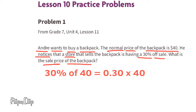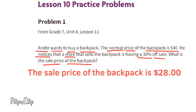0.30 times 40 equals 12, so 30% of 40 is $12. Andre gets to take $12 off the original price. 40 minus 12 equals 28, so the sale price of the backpack is $28.